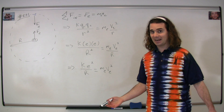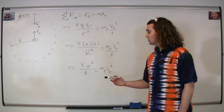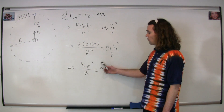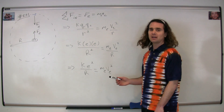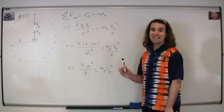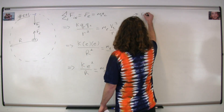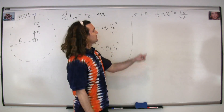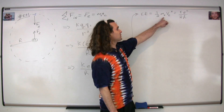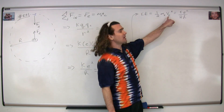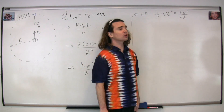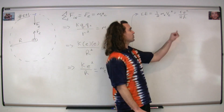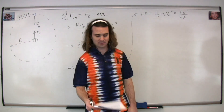Our goal was to get to the kinetic energy, so we just multiply this whole thing by one-half to get one-half mass times velocity squared — the kinetic energy. So the kinetic energy ends up being one-half times the mass of the electron times the velocity of the electron squared, or Coulomb's constant times the fundamental charge squared, divided by 2 times the radius.